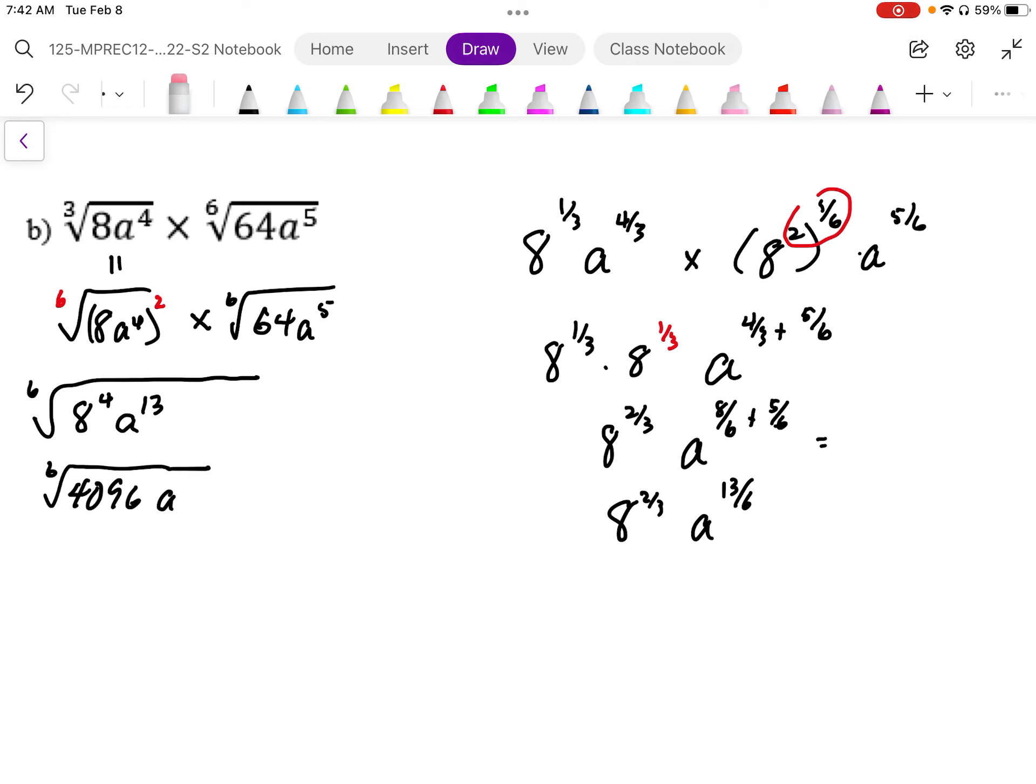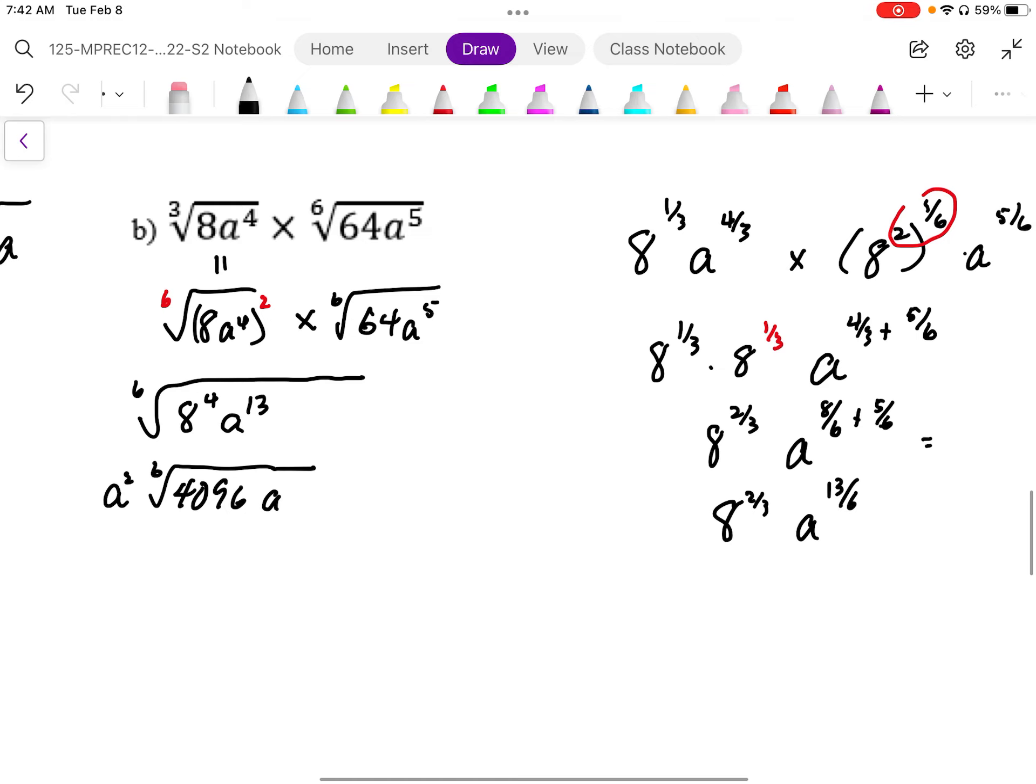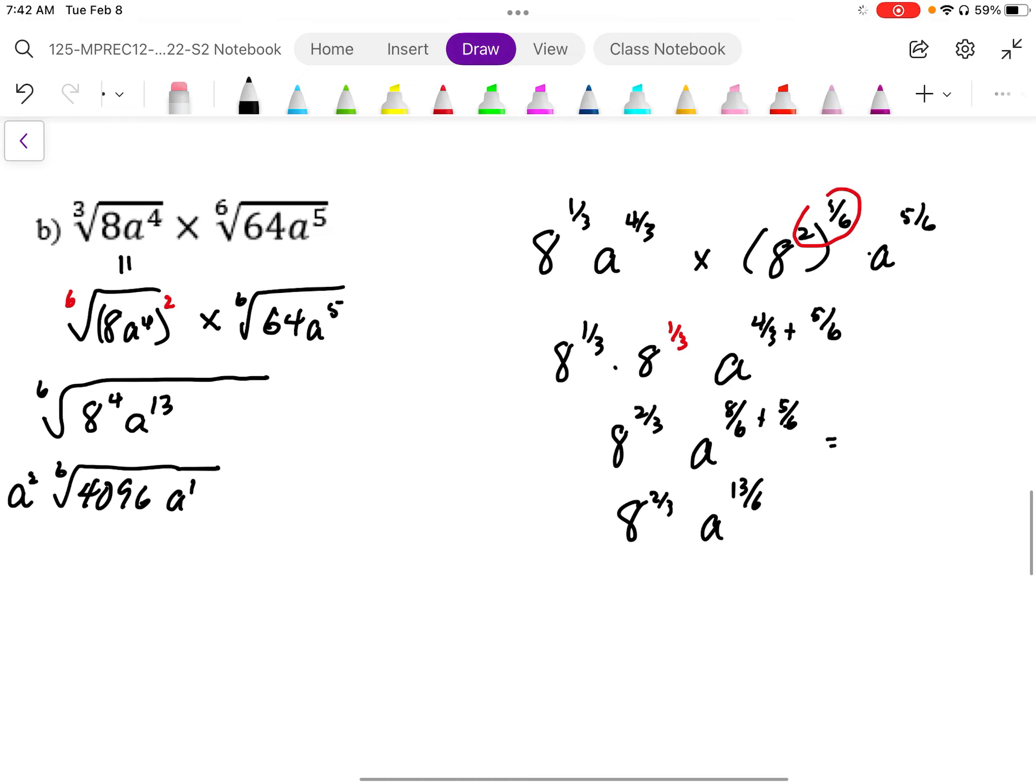So that should have ended up being, pulling an a squared out of here, and we're left with a to the power of 1. And so this, again, we could rewrite this like that.